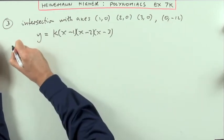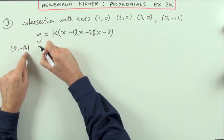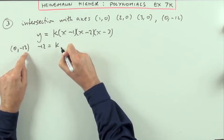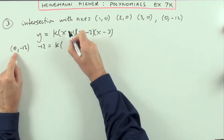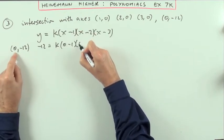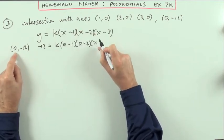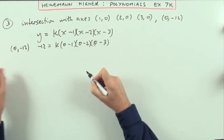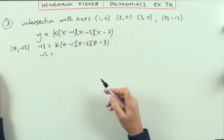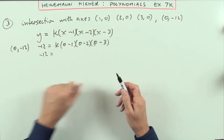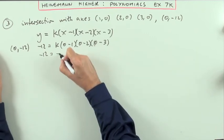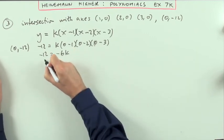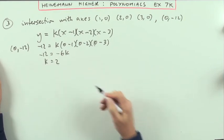So using the point 0, negative 12, that means when y was negative 12, the other side should have come to 0 take away 1, x is 0 take away 2, x is 0 take away 3. So negative 12 would equal 1 times 2 times 3 is 6, 3 negatives makes it negative 6, that's negative 6k. And straight away, that means k must equal 2.